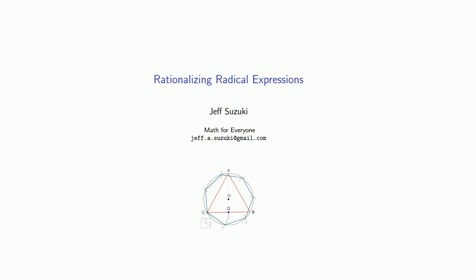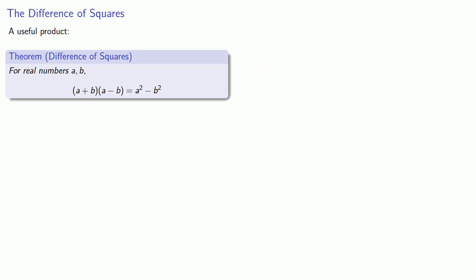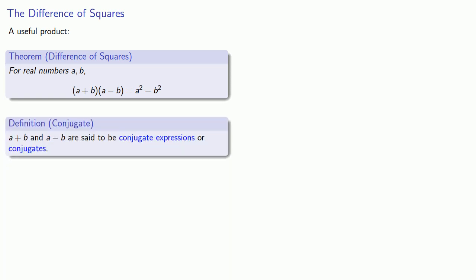What about other types of radical expressions? It's useful to remember the following product. For any real numbers a and b, the product a plus b times a minus b is equal to a squared minus b squared. This leads to a useful definition: a plus b and a minus b are said to be conjugate expressions, or conjugates.